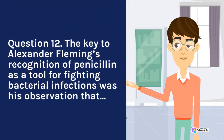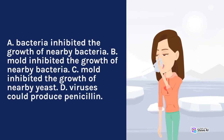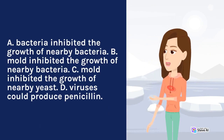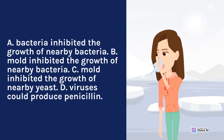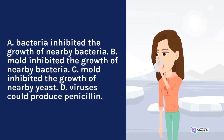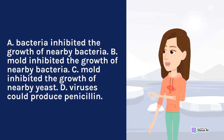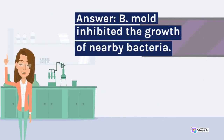Question 12. The key to Alexander Fleming's recognition of penicillin as a tool for fighting bacterial infections was his observation that: A. Bacteria inhibited the growth of nearby bacteria. B. Mold inhibited the growth of nearby bacteria. C. Mold inhibited the growth of nearby yeast. D. Viruses could produce penicillin. Answer: B. Mold inhibited the growth of nearby bacteria.